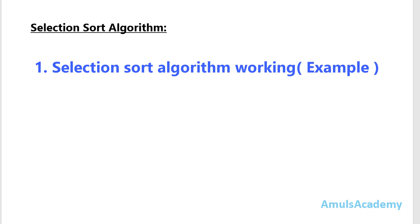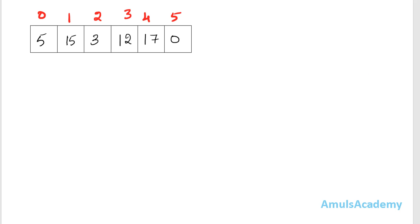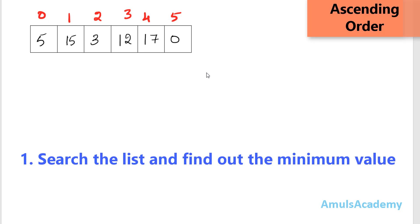First we will take an example and see how to sort using selection sort algorithm. Here are the numbers: 5, 15, 3, 12, 17, and 0 — total 6 numbers in a list. The index of the first element will be 0, 1, 2, 3, 4, 5. The first step in the selection sort algorithm is to search the list and find out the minimum number. We are sorting in ascending order, so the smallest number will be present in the first place.